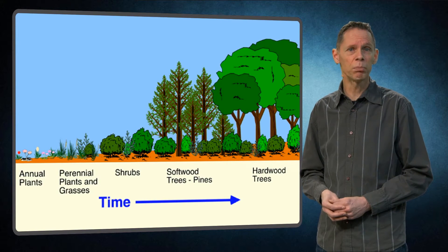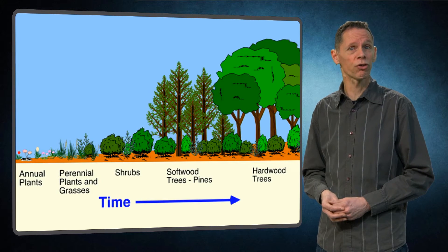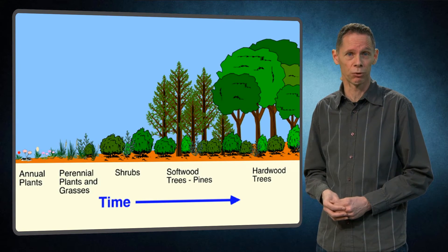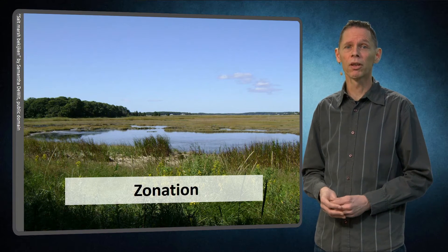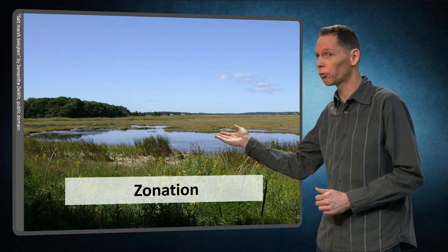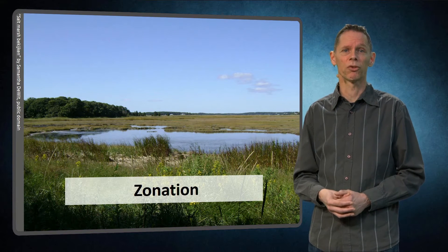Animals depend on plants for food and habitat. Therefore, animal species composition often changes with the succession process. Often, succession can be visible as a zonation in ecosystems.